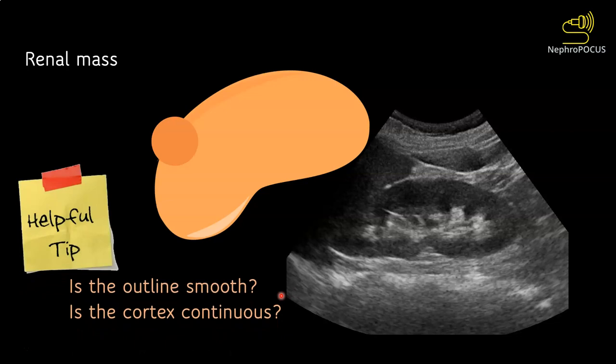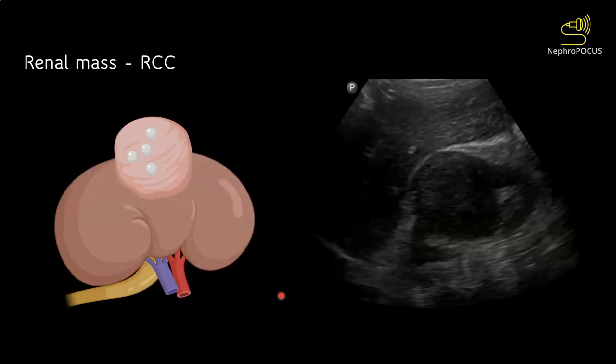The first question is: is the kidney outline smooth? Because most masses tend to grow outward, disrupting the outline of the kidney — meaning the kidney changes from its normal bean shape to something else. The second question is: is the cortex or the renal parenchyma continuous? Because masses usually cause a disruption or discontinuous nature of the parenchyma.